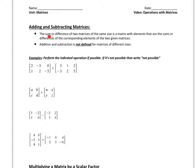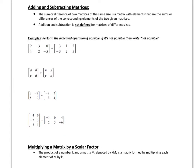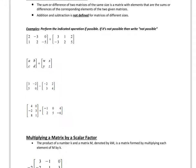The sum or difference of two matrices of the same size is a matrix with elements that are the sums or differences of the corresponding elements of the two given matrices. Addition and subtraction is not defined for matrices of different sizes. So let's do a few examples so we can see if we understand the concept.